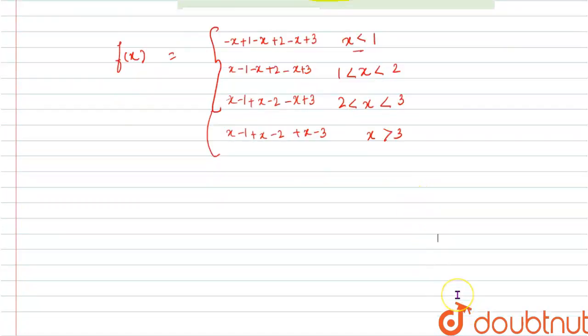Now when we simplify it, we get f(x) equal to -3x+6 when x is less than 1, -x+4 when x lies between 1 and 2.